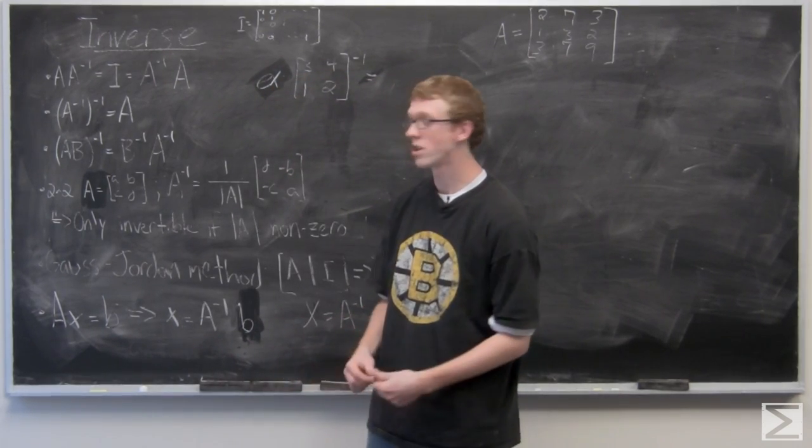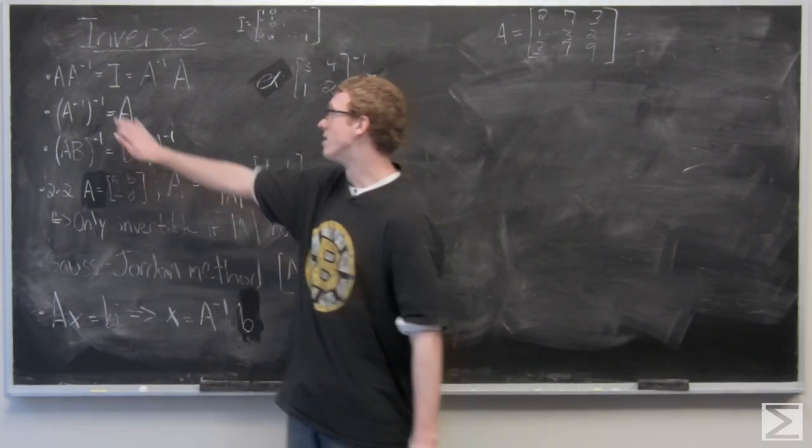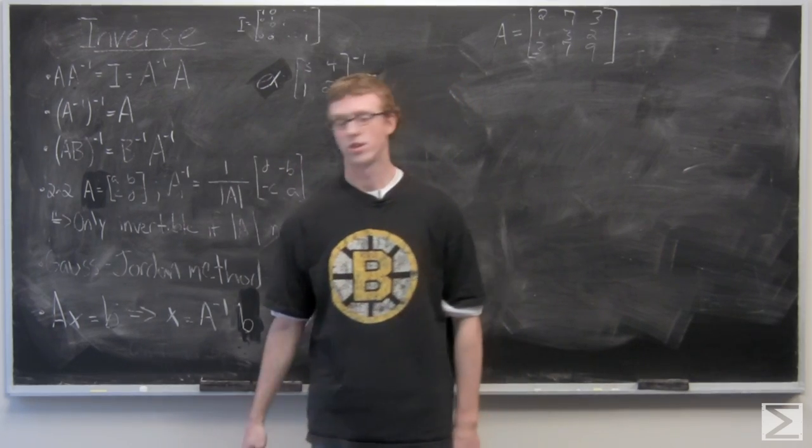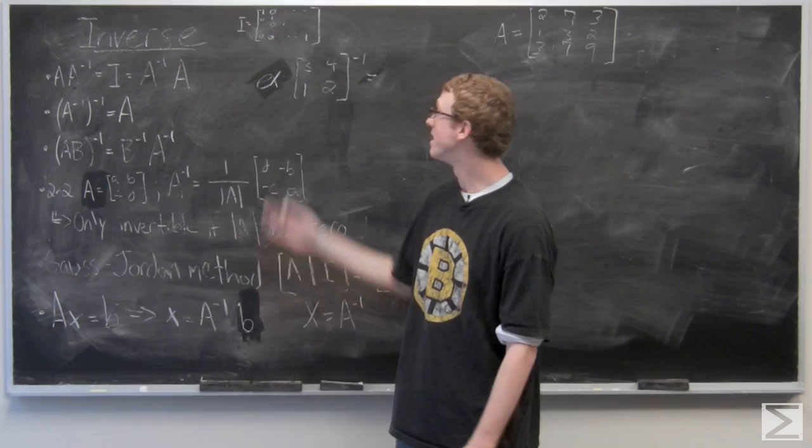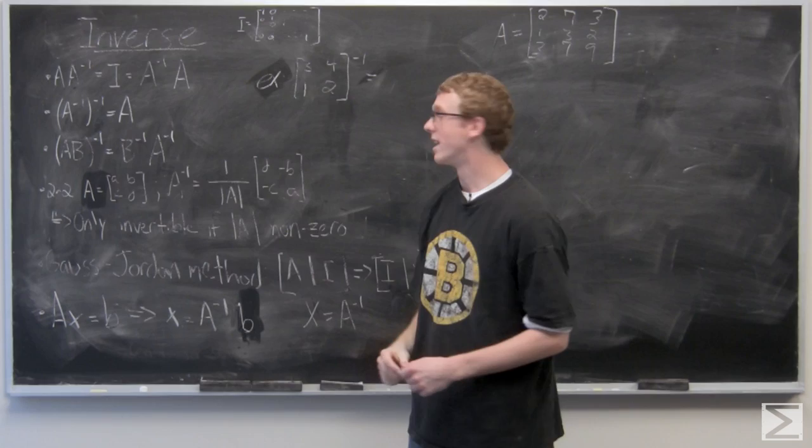So you can only take the inverse of a square matrix and essentially what that looks like is A times A inverse is going to equal I, which also equals A inverse times A. I is the identity matrix up here. It's what I has depending on the size.